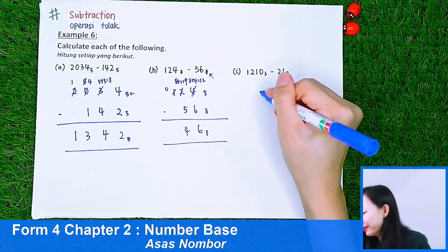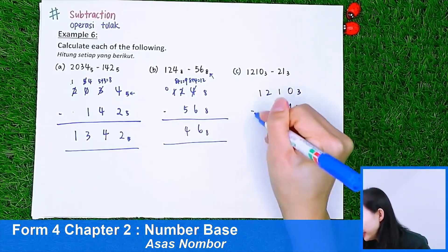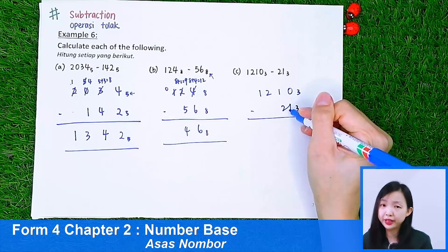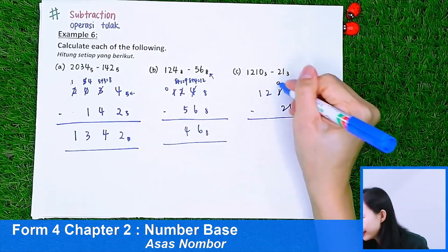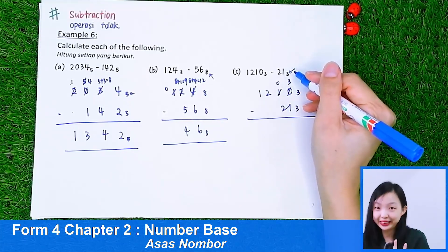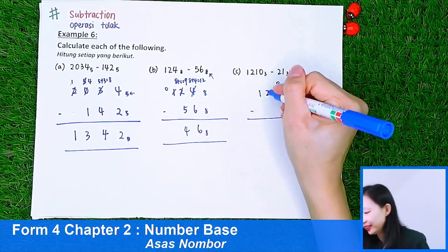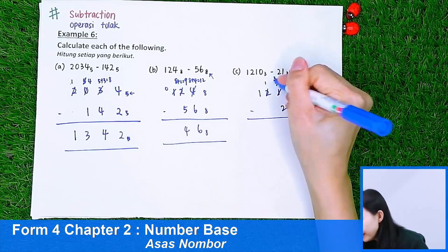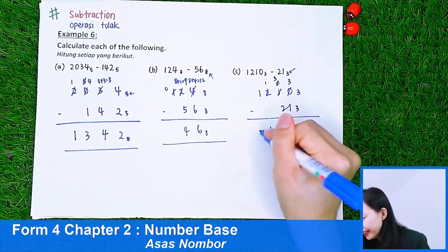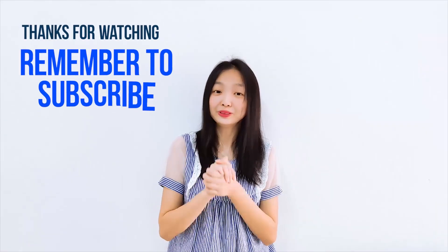For the last example: 1, 2, 1, 0 in base 3 minus 2, 1 in base 3. 0 can't minus 1, so we borrow from the next digit — the 1 becomes 0, and the 0 becomes 3. 3 minus 1 is 2. Then 0 can't minus 2, so we borrow again — giving 3. 3 minus 2 is 1. And the remaining digits subtract normally. That's all — hope this video helps you understand more about number base. Remember to like, share, and subscribe to my YouTube channel. Bye!